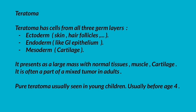Teratoma has cells from all three germ layers: ectoderm (like skin and hair follicles), endoderm (like GI epithelium), and mesoderm (like cartilage). It presents as a large mass containing normal tissues such as muscle and cartilage. It is often part of a mixed tumor in adults. Pure teratoma is usually seen in young children, before age four.